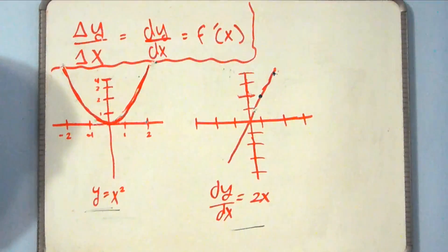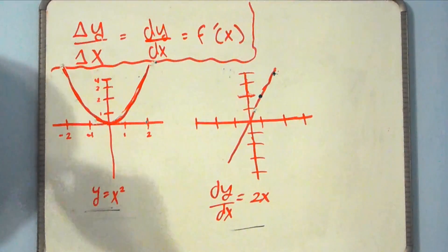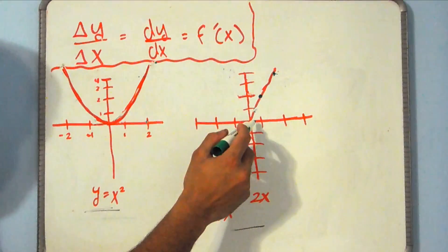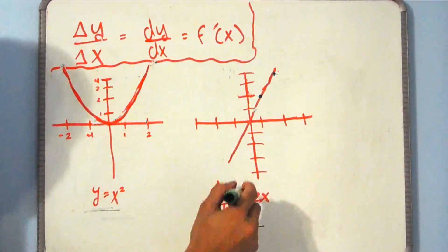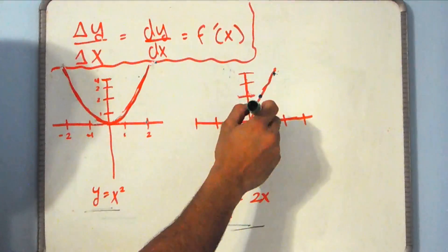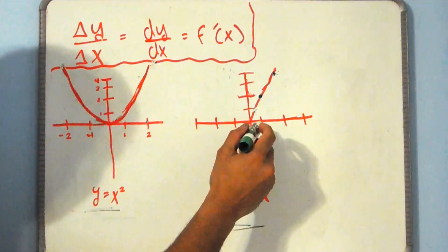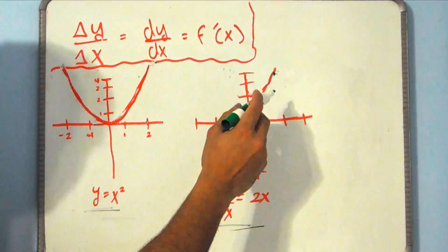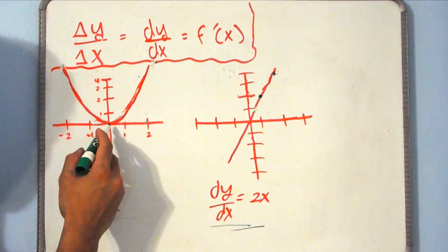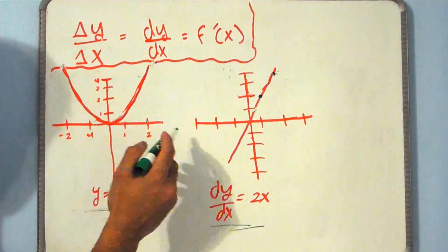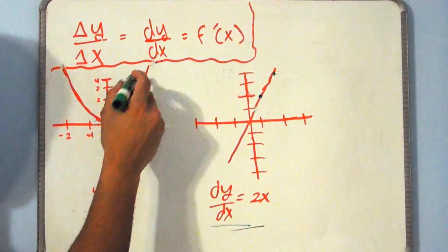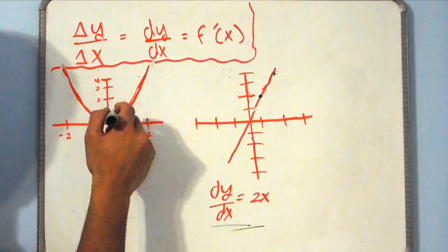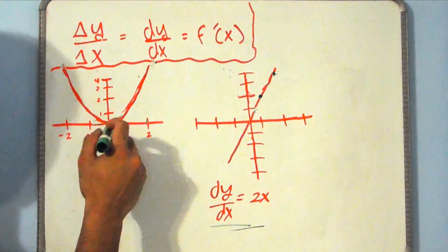And it may seem confusing, but let me clarify. If we take any x coordinate greater than 0, we see that the corresponding y coordinate on this graph is positive. Like if we take 1, we see that dy dx equals 2. And if we come over here and use that same region, meaning x is greater than 0, we know that the slope is increasing — these are positive slopes.